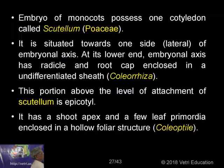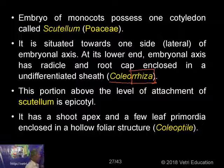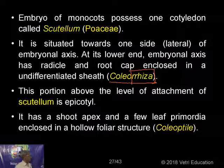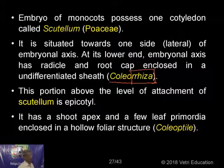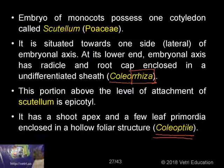In the dicot embryo, you have two cotyledons, the hypocotyl, radicle, plumule, and root cap. In the monocot embryo, there is only one cotyledon — the scutellum — situated towards one side of the embryonal axis. At the lower end, the embryonal axis has a radicle and root cap enclosed in an undifferentiated sheath called the coleorhiza. Rhiza means root, so coleorhiza covers the root portion. The portion above the attachment of the scutellum is the epicotyl, with a shoot apex and leaf primordia enclosed in a hollow structure called the coleoptile. Coleoptile and coleorhiza are two important structures unique to monocots.